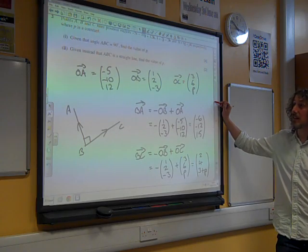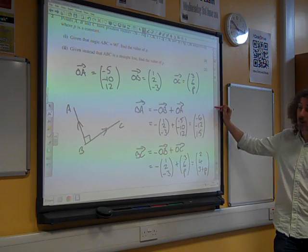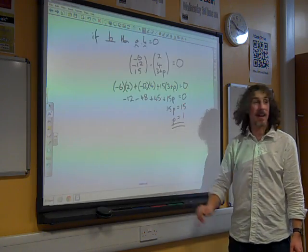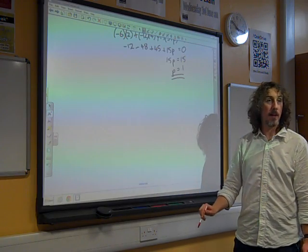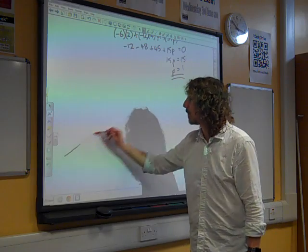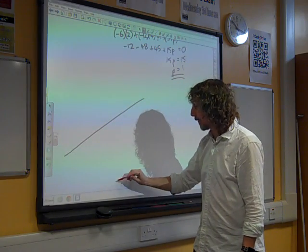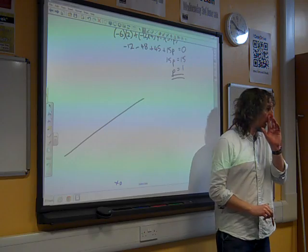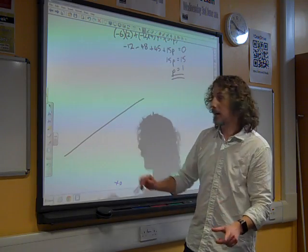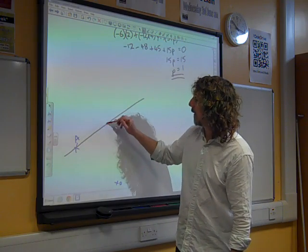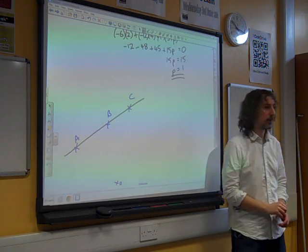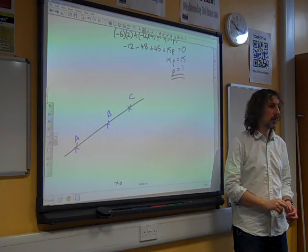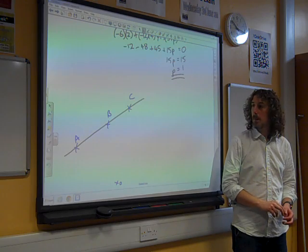And now this next one, given instead that ABC is a straight line, find the value of P. Well, again, I think a diagram is really important. What we're talking about here is a straight line. And you've got the origin. And we're saying that the three points A, B and C lie in a straight line.